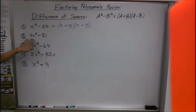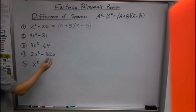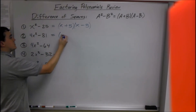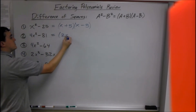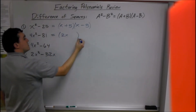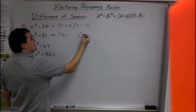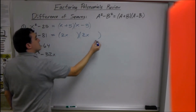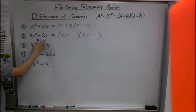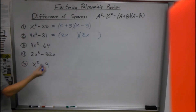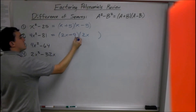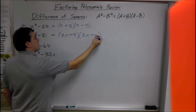Same thing here — the square root of 4x² is 2x, so that goes first in both. And the square root of 81 is 9, so we get (2x + 9)(2x - 9).